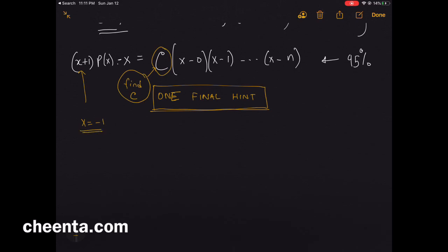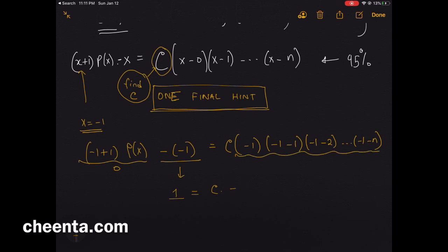Plug in x equals to negative 1. You get (-1+1) times P(x) minus (-1) is equal to C times (-1), (-1-1), (-1-2), up to (-1-n). Okay, so this portion is 0, and this is just 1. So 1 equals to C times—so there are n plus 1 negatives, so (-1) raised to the power n plus 1 times (n+1) factorial.